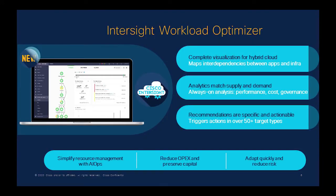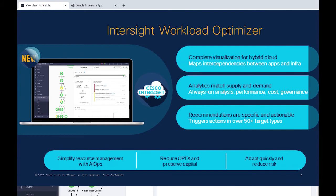Let us now look at Intersight Workload Optimizer. Intersight Workload Optimizer bridges the gap between application and infrastructure. The applications or workloads can be any virtual machines or containers running on-prem or on public cloud. It provides two main functionalities: first, complete visibility of the application and its underlying infrastructure stack; and second, continuous workload recommendations in three major areas — performance optimization, cost reduction, and policy compliance — by matching application resource demand with infrastructure availability.